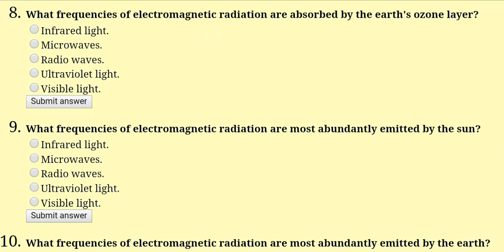What frequencies of electromagnetic radiation are absorbed by the Earth's ozone layer? This is easy — the answer is ultraviolet light. Ultraviolet light is absorbed by the Earth's ozone layer.